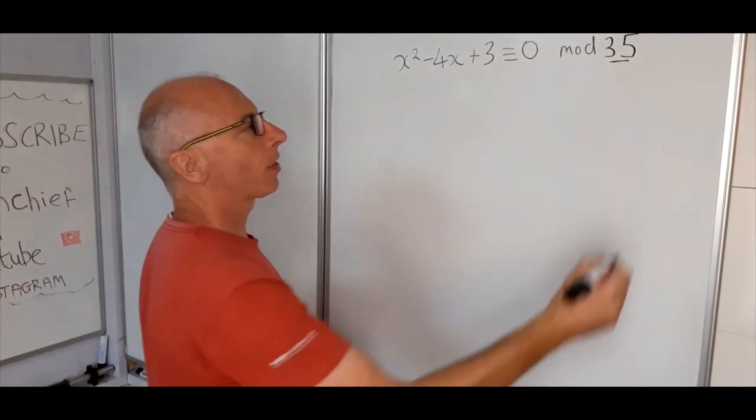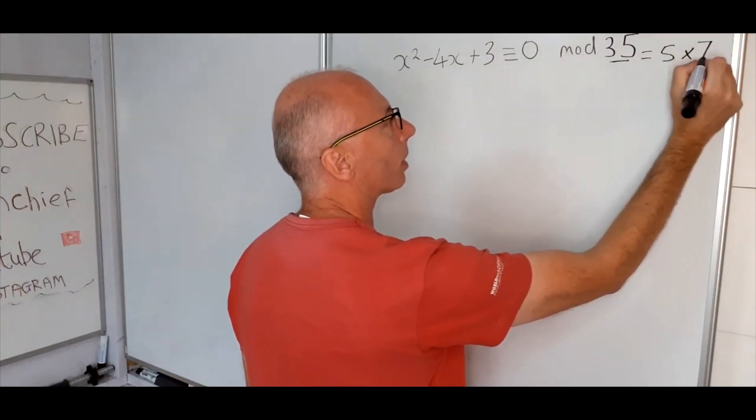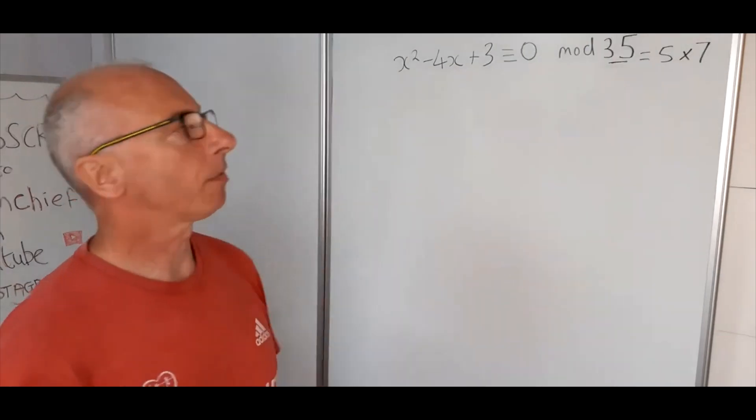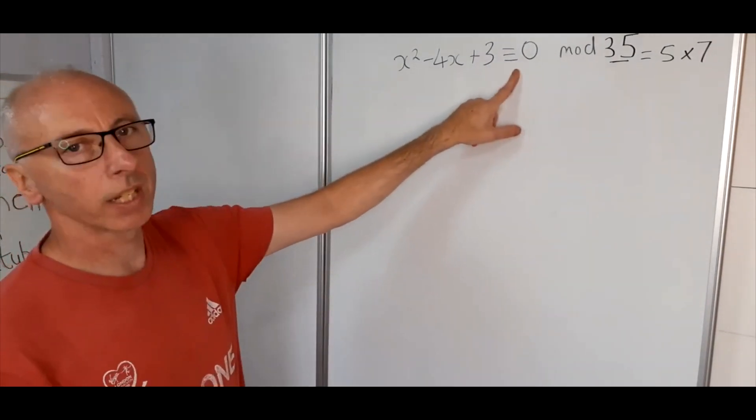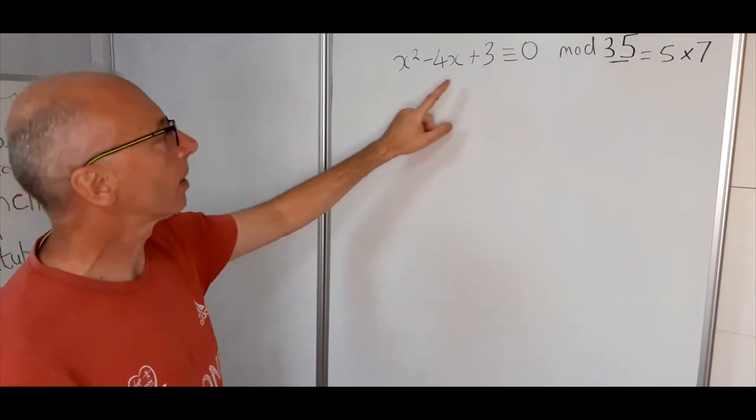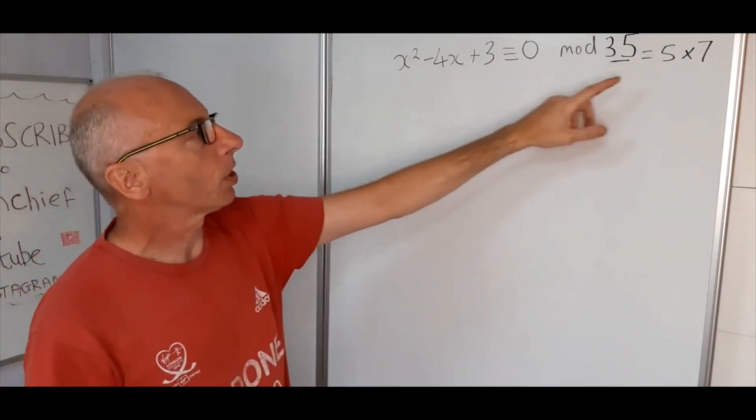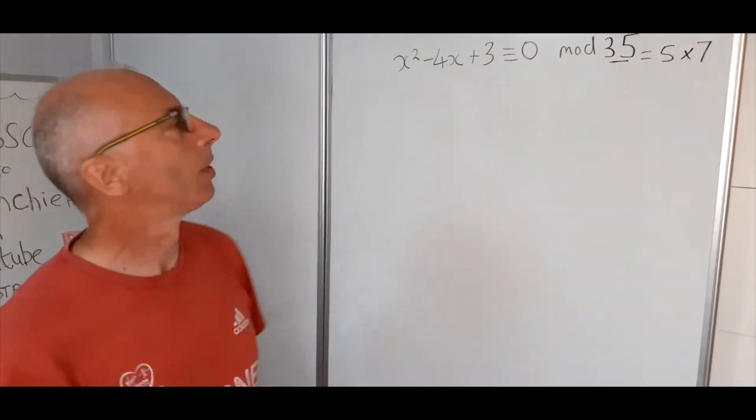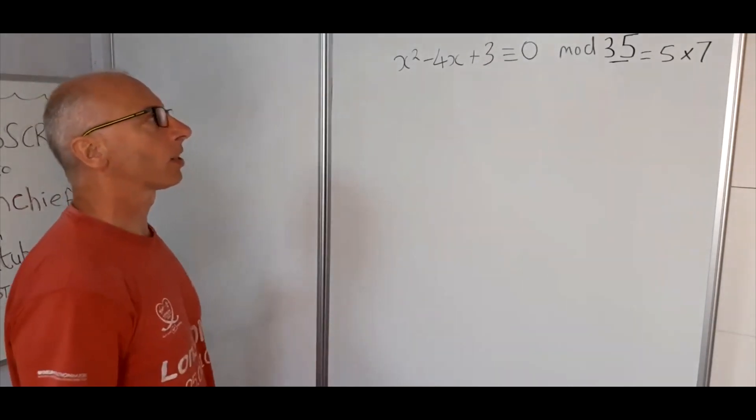So first thing we see is that 35 is the same as 5 times 7, that's its prime factors. So now what we've got to do is try and solve this initially, although it won't give us the final answer, x squared minus 4x plus 3 is congruent with 0 modulo 5 and modulo 7. So I'm going to do that here now underneath, that's the next stage.